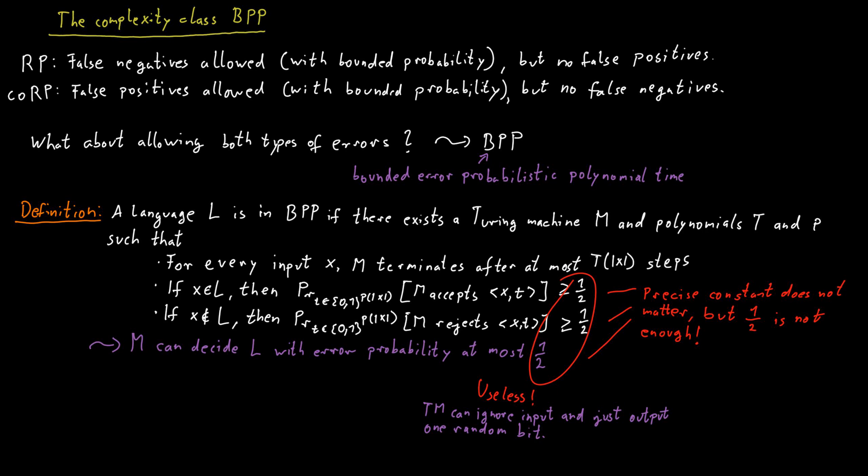So this Turing machine clearly doesn't do anything useful. It just flips a coin and says yes or no, depending on whether it gets heads or tails. And yet this Turing machine satisfies all these conditions. So this is not useful at all. This class would contain every single decision problem there is.